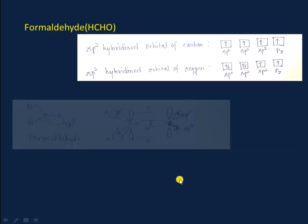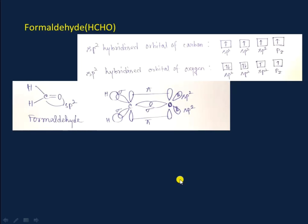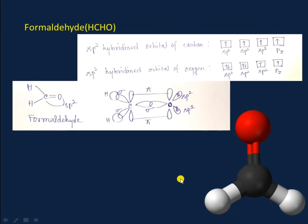Let's move on to formaldehyde. In formaldehyde, two lone pairs of the oxygen atom remain in two sp2 hybrid orbitals. Two sp2 orbitals of the carbon atom form sigma bonds with two hydrogen atoms. The third sp2 orbital of the carbon atom with an unpaired electron overlaps with the sp2 orbital of the oxygen atom having an unpaired electron to form a sigma bond.